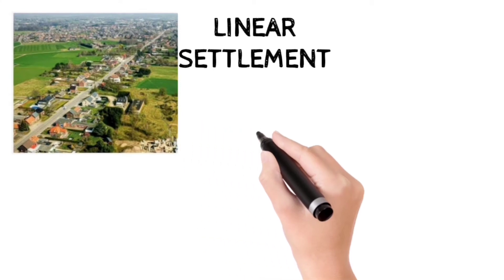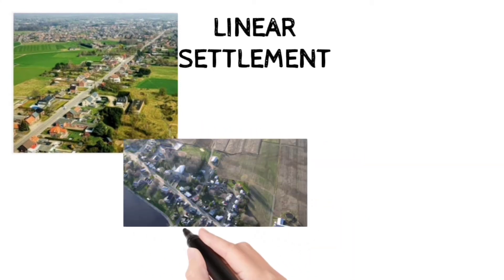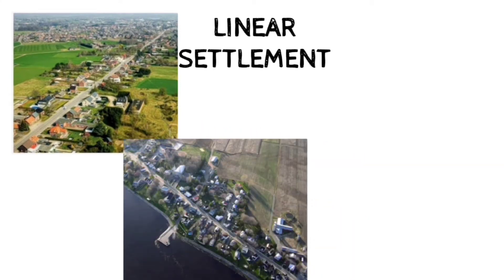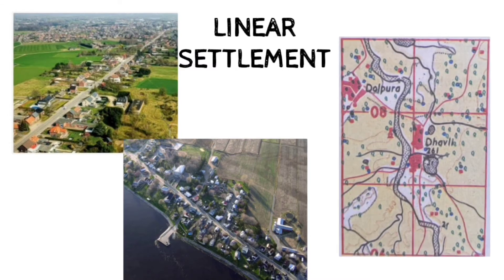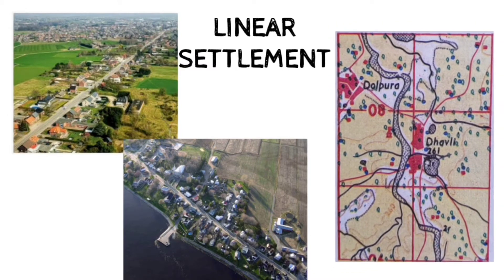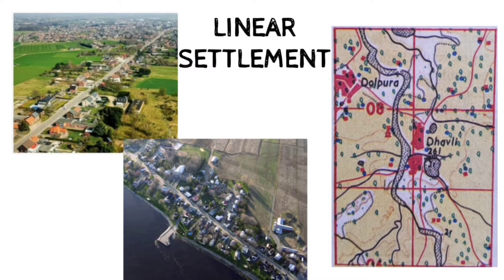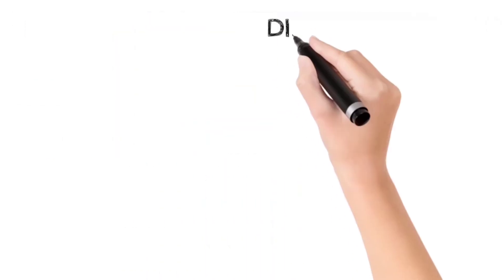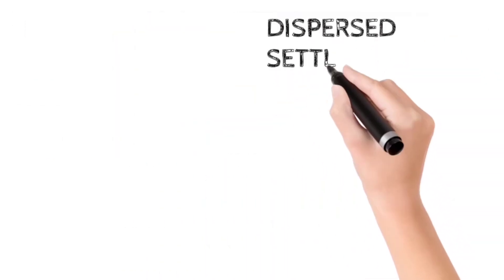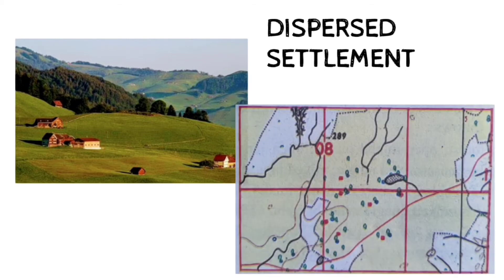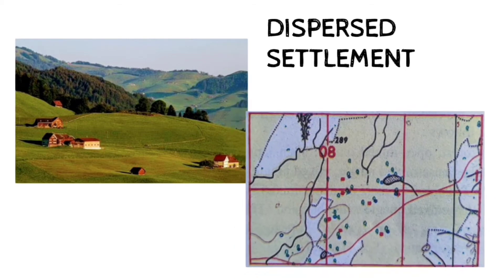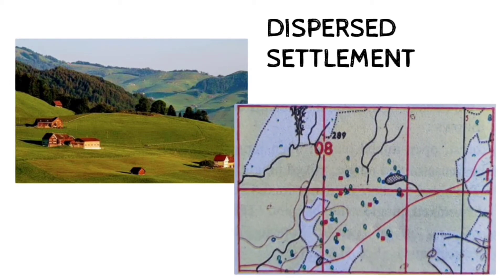Next is linear settlement. Linear settlements are developed on either side of a river, road or railway, which seems like a line. They generally develop because of communication facilities which help in developing trade. The last pattern is the dispersed pattern, found in remote areas or places which don't favor much growth of settlement. Here the dwellings are few and scattered away from each other — more or less isolated, with a smaller population.